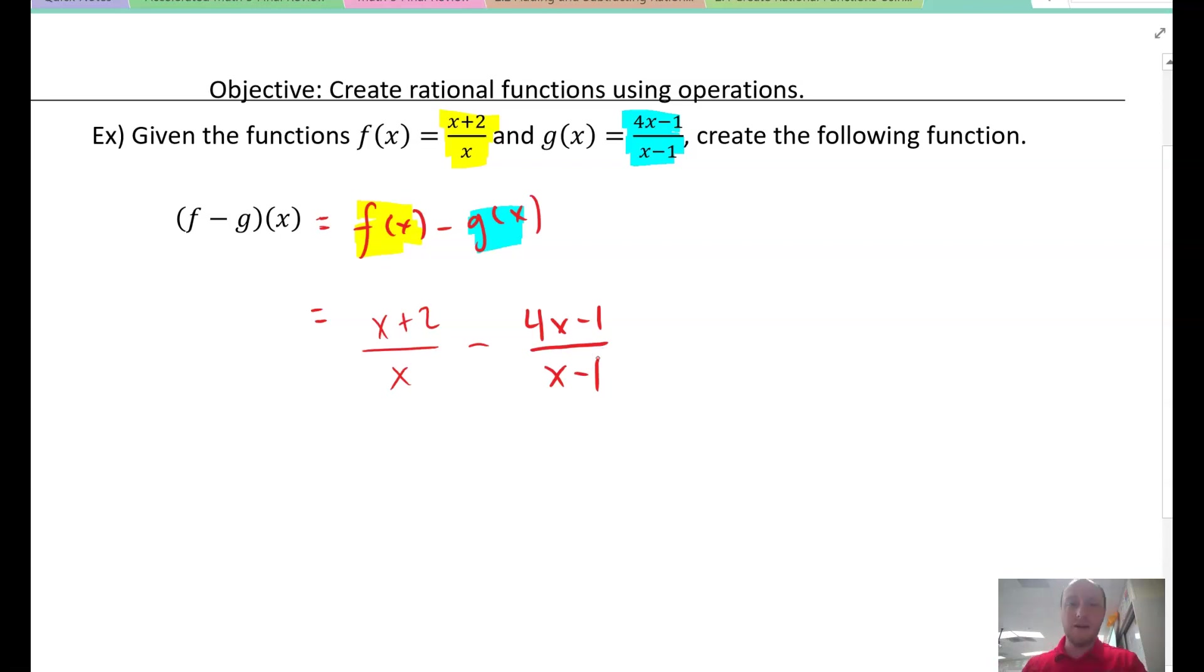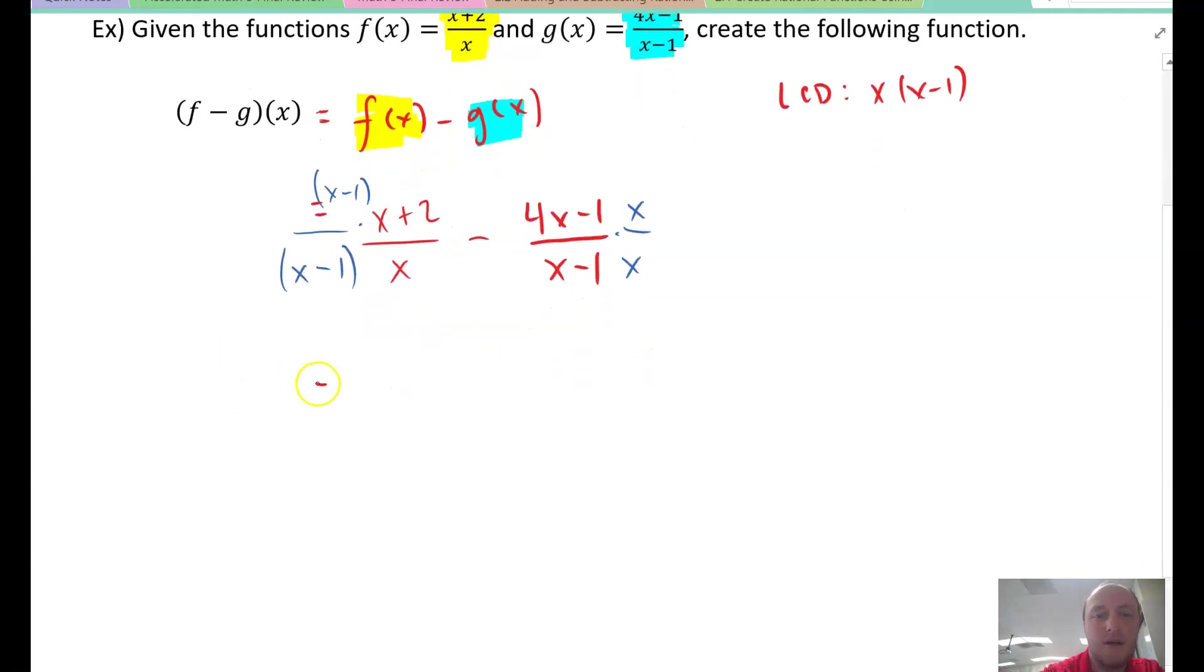Now we have a regular subtracting rational expressions. You're going to find your LCD, which clearly is x and x minus 1. So we'll introduce those factors: x minus 1 over x minus 1, and multiply by x over x. What I get is x times 2 is 2x, negative 1 times x is negative x, so all we have left over is positive x over our LCD.